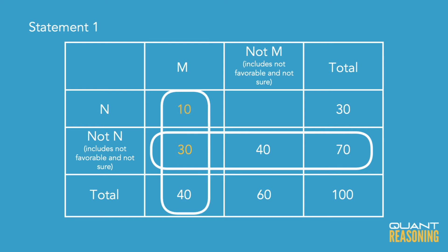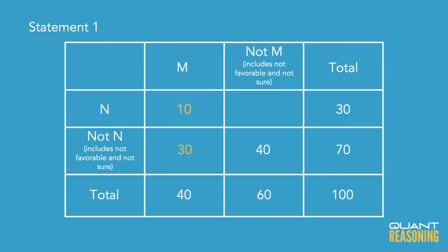With two steps, we can find what they're asking for: the total number of people who found both candidates favorable is 10. So Statement 1 is sufficient on its own, and we can eliminate answer choices B, C, and E.